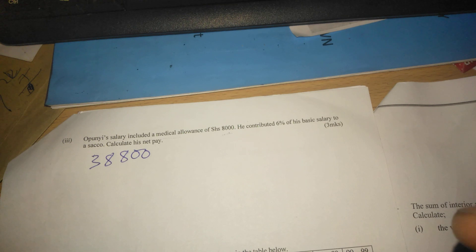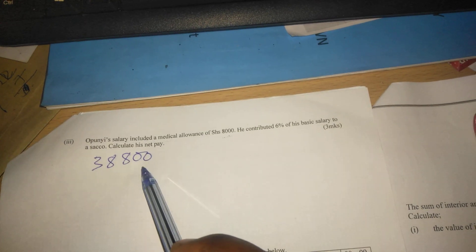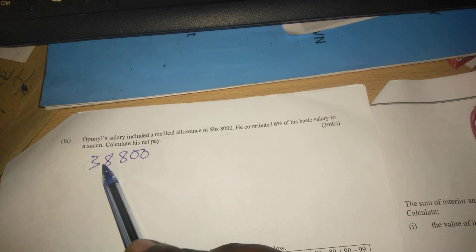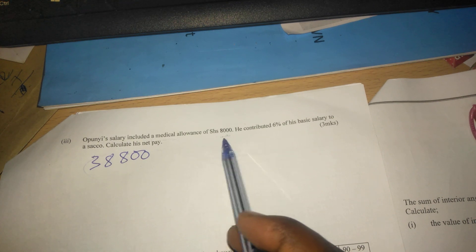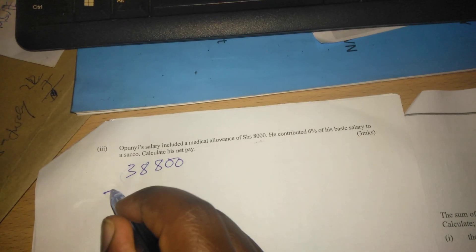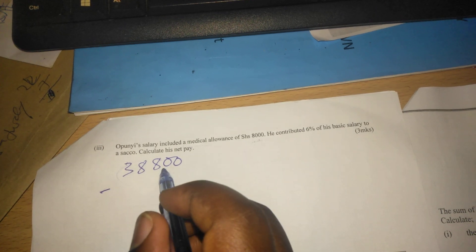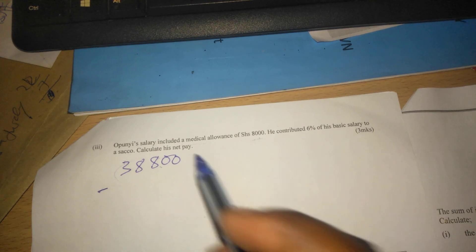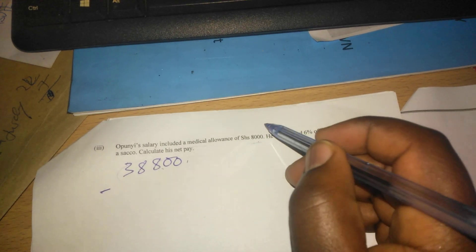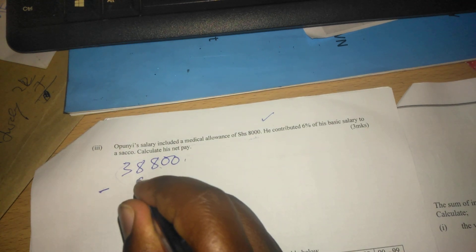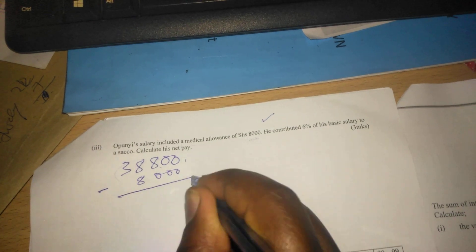We are told that in this salary all of it there is a medical allowance. For us to get basic salary, we subtract allowances from the taxable income, because we know taxable income is basic salary plus allowances. We have the taxable income and the allowance, so to get back to the basic salary we subtract 8,000, such that we remain with 30,800.